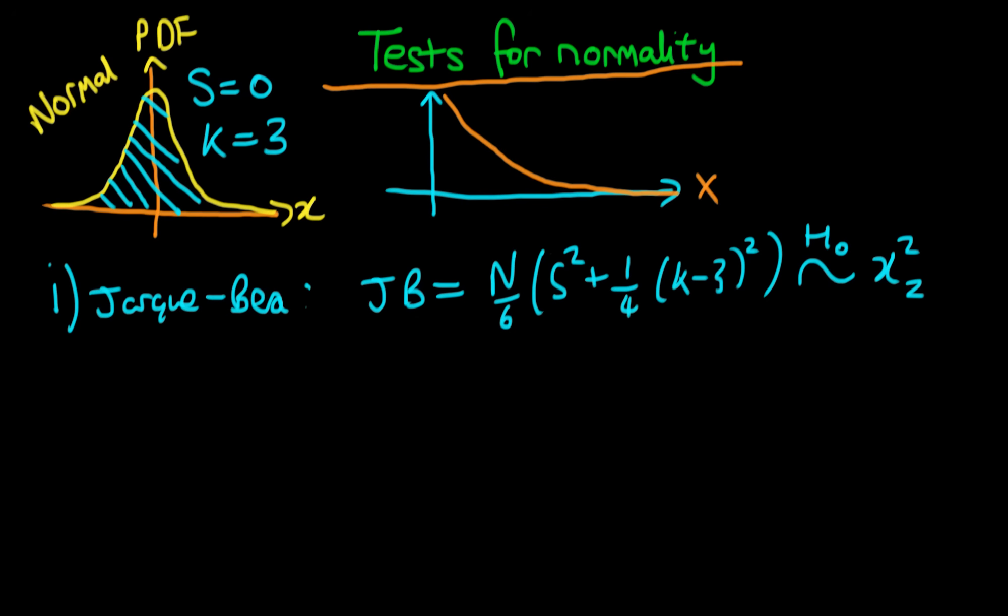The idea is that if we get a value for this particular statistic which is a long way away from zero, it's very unlikely that would have come about if we did actually have a chi-squared distribution with two degrees of freedom.